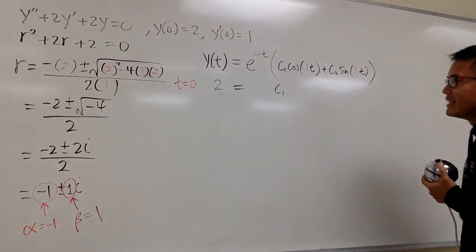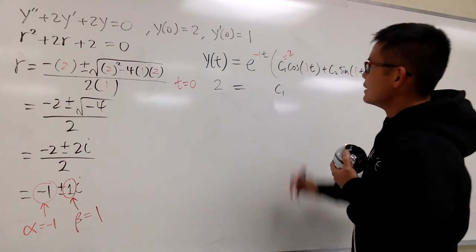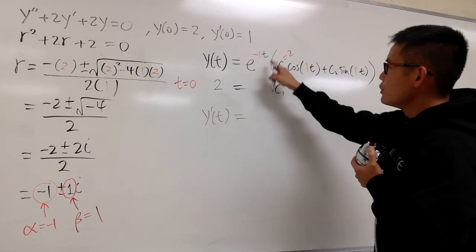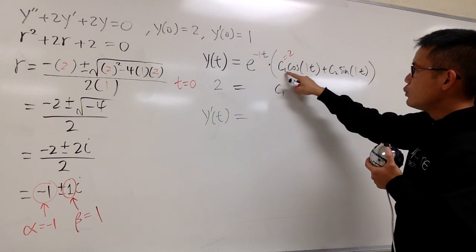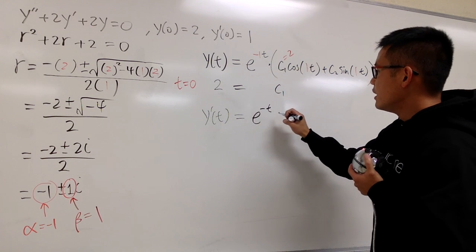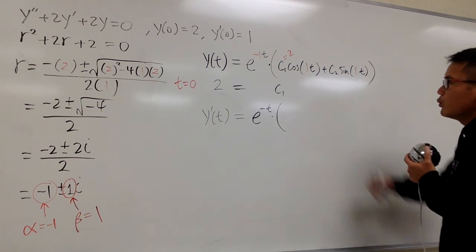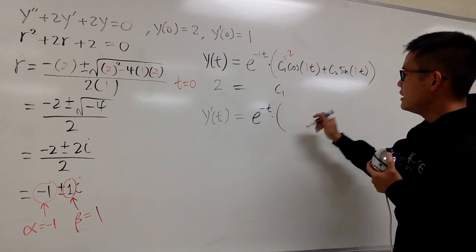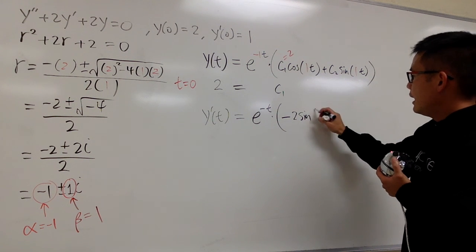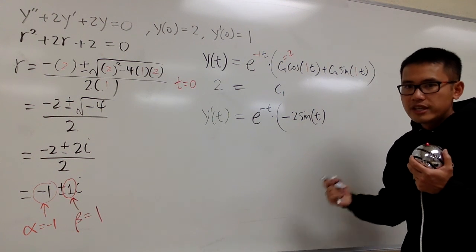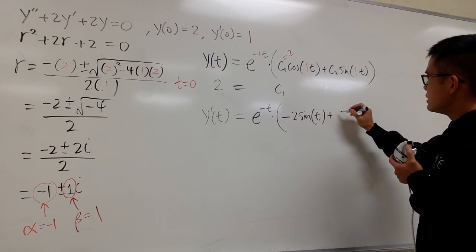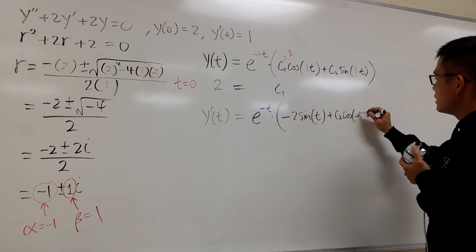In order to use the second initial condition, I have to differentiate. I'm going to use the product rule, treating e to the negative t as the first function and the trig expression as the second. Keeping the first, the derivative of c1 cosine t plus c2 sine t gives negative 2 sine t plus c2 cosine t — using the derivative of cosine is negative sine, and derivative of sine is cosine, with the chain rule giving a factor of 1.